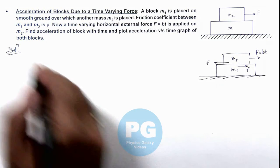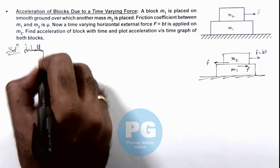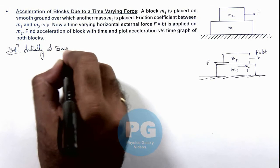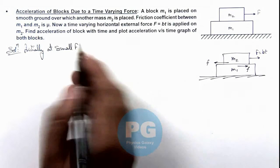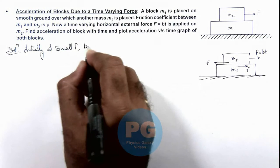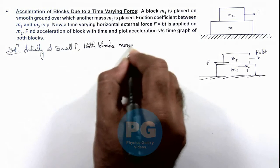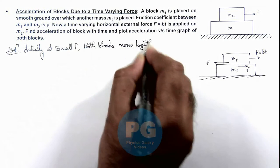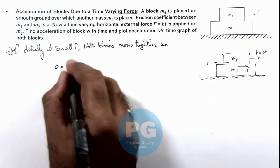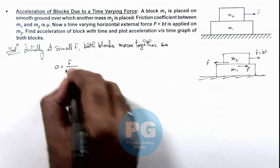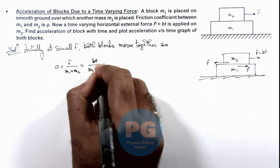Initially, at small F — because initially as t is small, F will also be small — both blocks move together. So we can simply write the acceleration of the blocks as F divided by (m1 + m2), which equals bt divided by (m1 + m2).